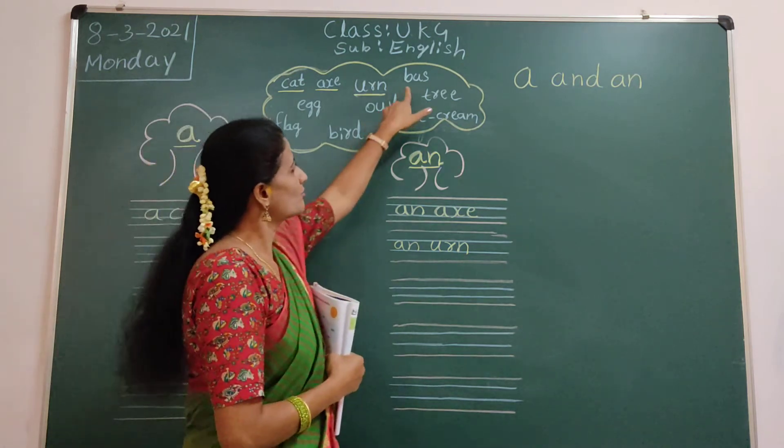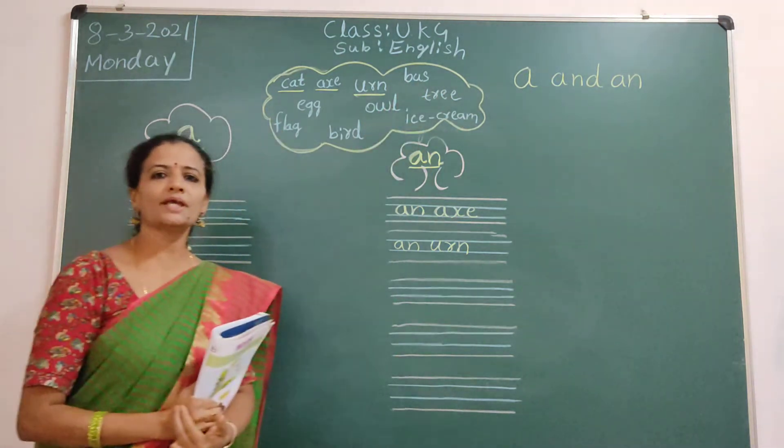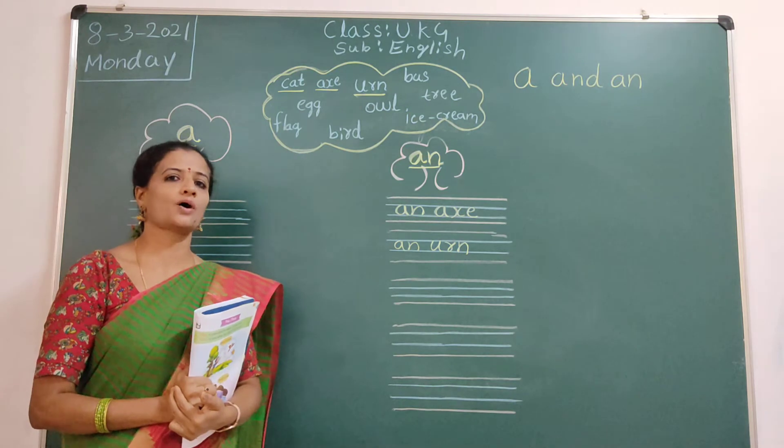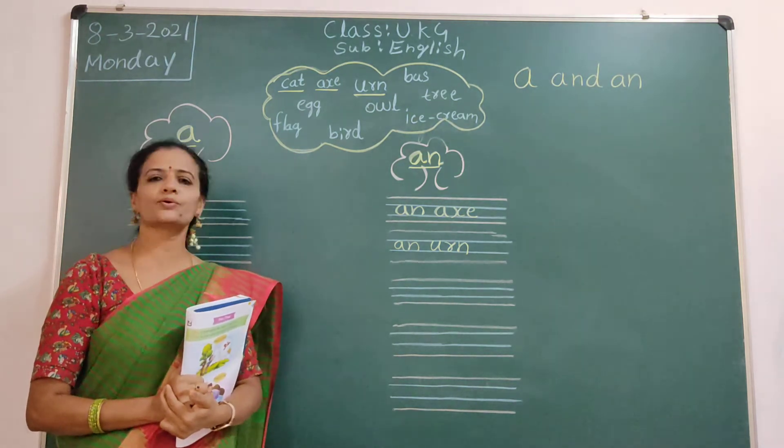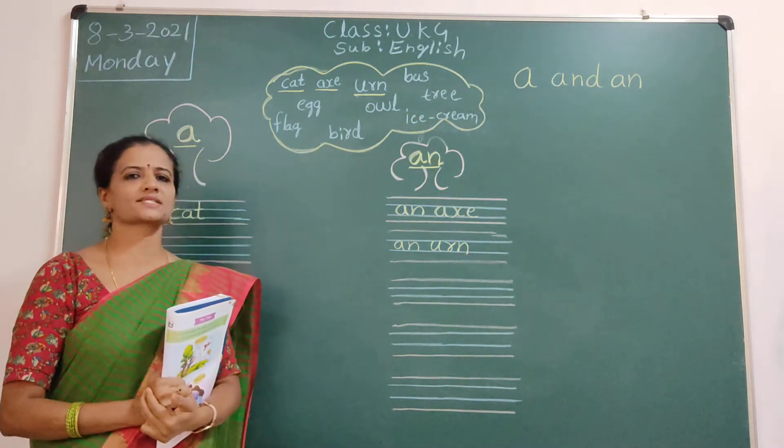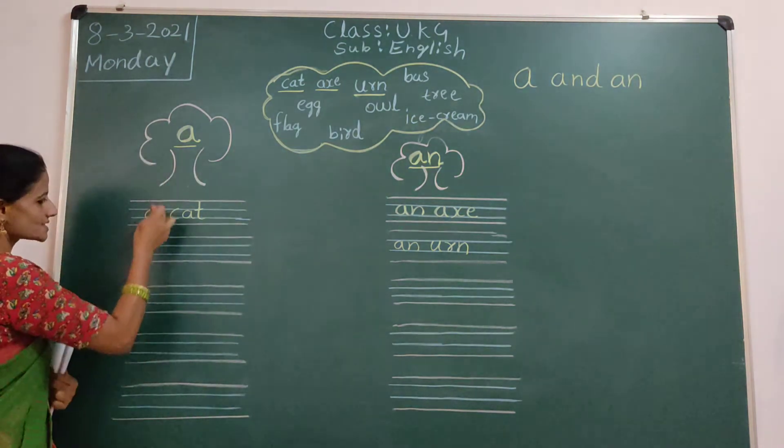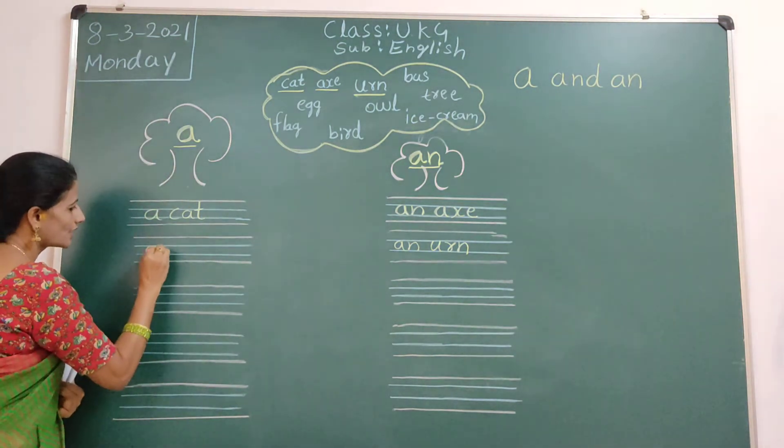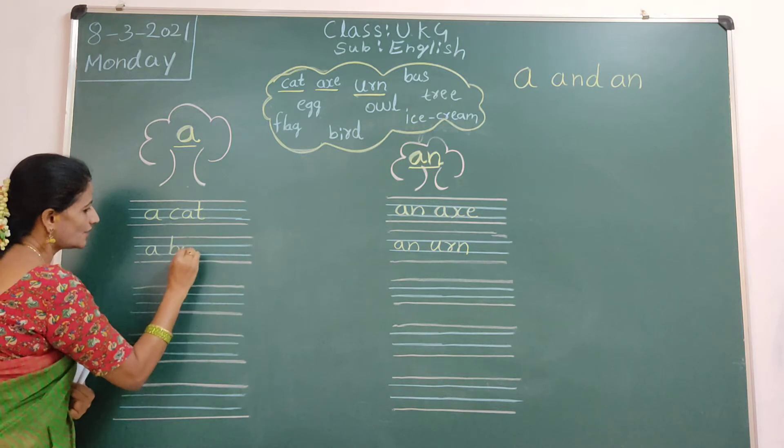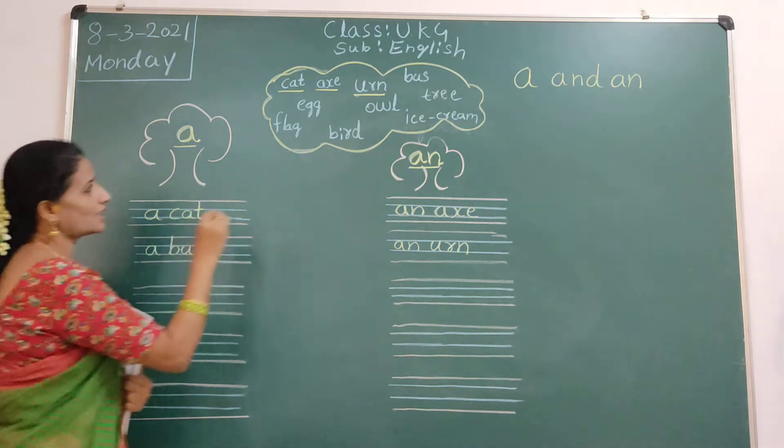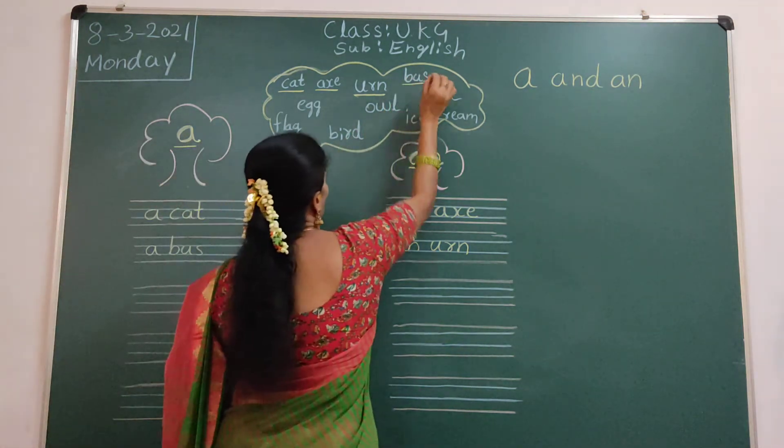Next, bus. B, U, S. Bus. So, how to use an bus? We will tell a no, no. We will call a bus. A bus. A side. A. Bus. A bus. So, bus also finished.